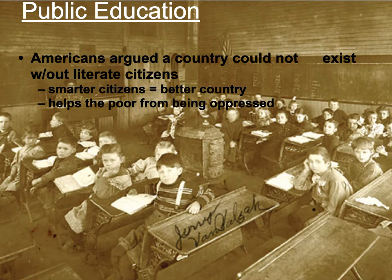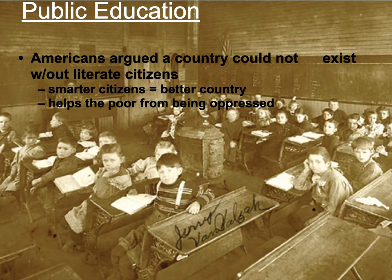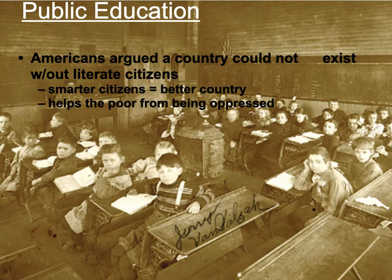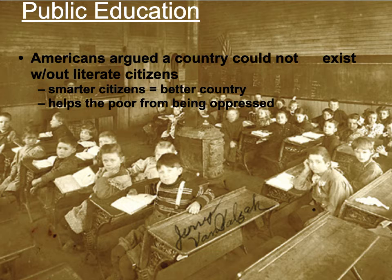Americans argued that a country could not exist without literate citizens — smart citizens equaled a better country. You cannot make informed decisions about your government unless you can read the newspaper or read the laws, know what that president or congressman stands for. So people needed to be literate in order to participate in democracy. It also helped the poor from being oppressed. During this time period, unless you lived in some communities in New England, if your parents didn't have the money to send you to school, you mostly just got an education with whatever your parents could teach you — generally the basics, a little bit of reading and writing.